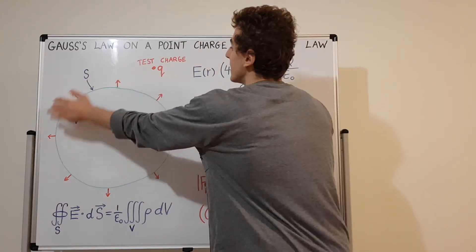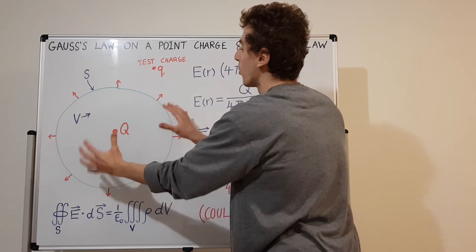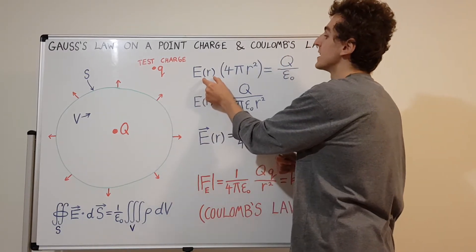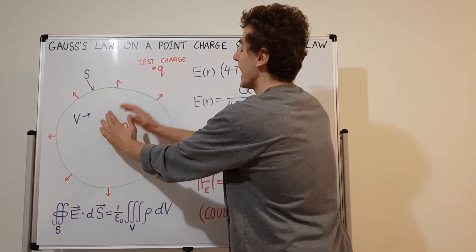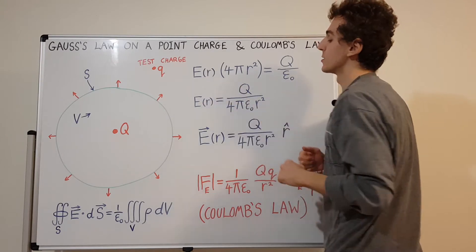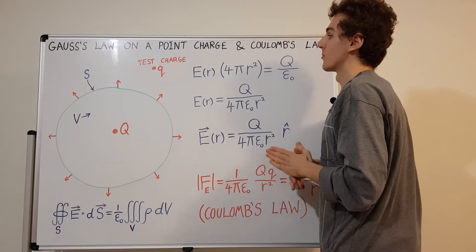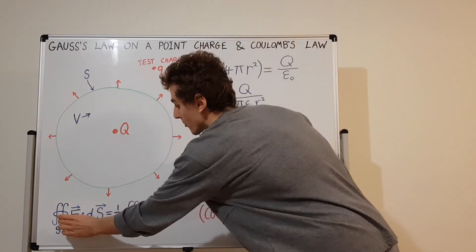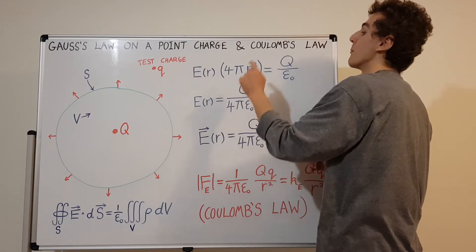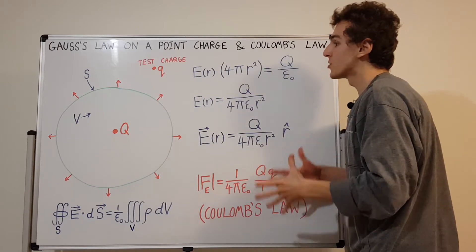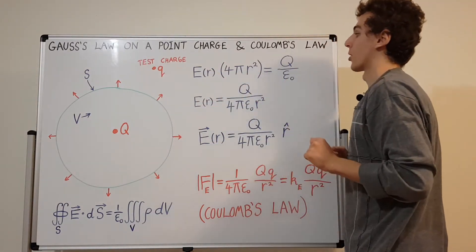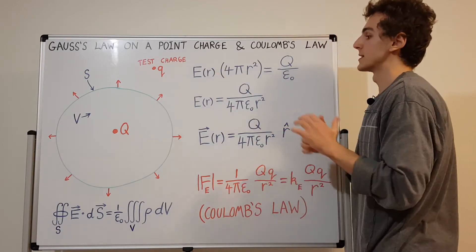It turns out the magnitude of the electric field doesn't vary either — it's constant at every point on the surface. Why? Because at every point on the surface, we're at distance r away from the center. That's a property of spheres; spherical symmetry is very convenient. So at every single point on this sphere in 3D space, the electric field magnitude is exactly the same. We can write it as E evaluated at radial distance r — this is an arbitrary radius that we're choosing, and it's what we're actually trying to solve for.